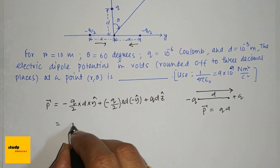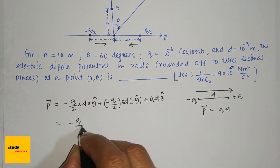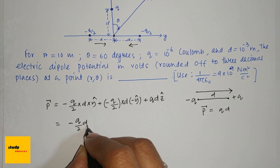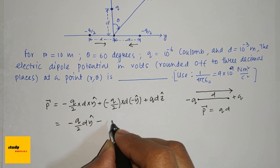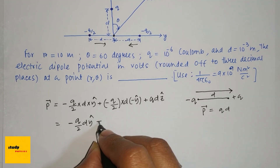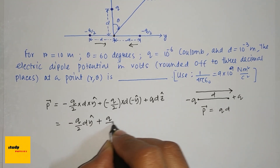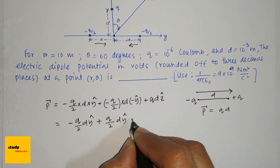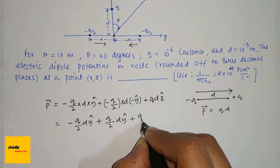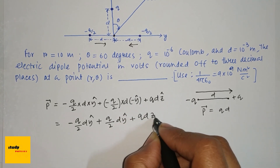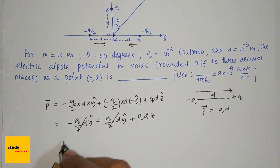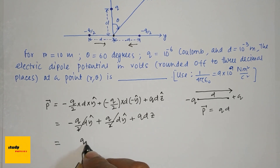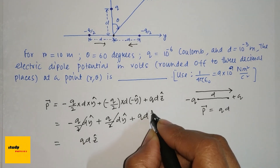So combining: minus q by 2 d y-cap, plus q by 2 d y-cap, plus q d z-cap. The y-cap terms cancel, so the net dipole moment is q d z-cap.